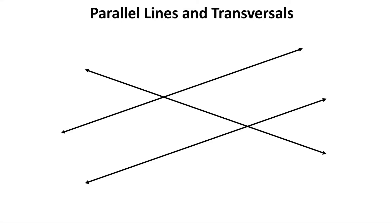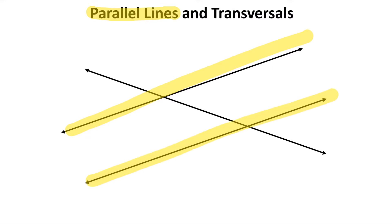Hello, this is a quick review video about parallel lines and transversals. As a quick reminder, parallel lines are two lines that never ever cross or intersect. So in this picture, these two lines here would be considered parallel lines because they're never crossing.